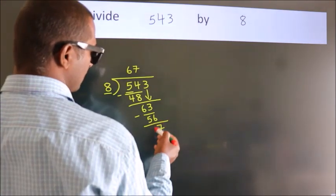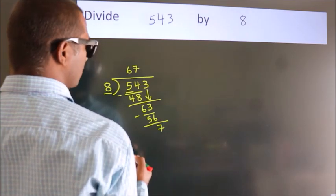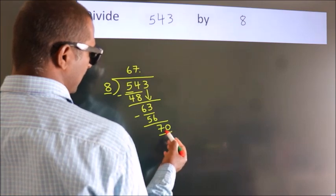After this, no more numbers to bring down. So what we do is put a dot and take 0. So 70.